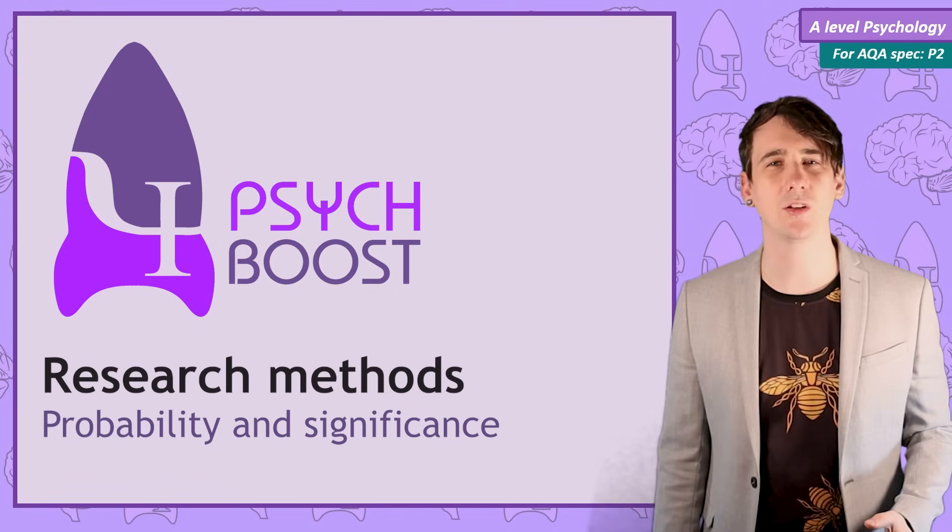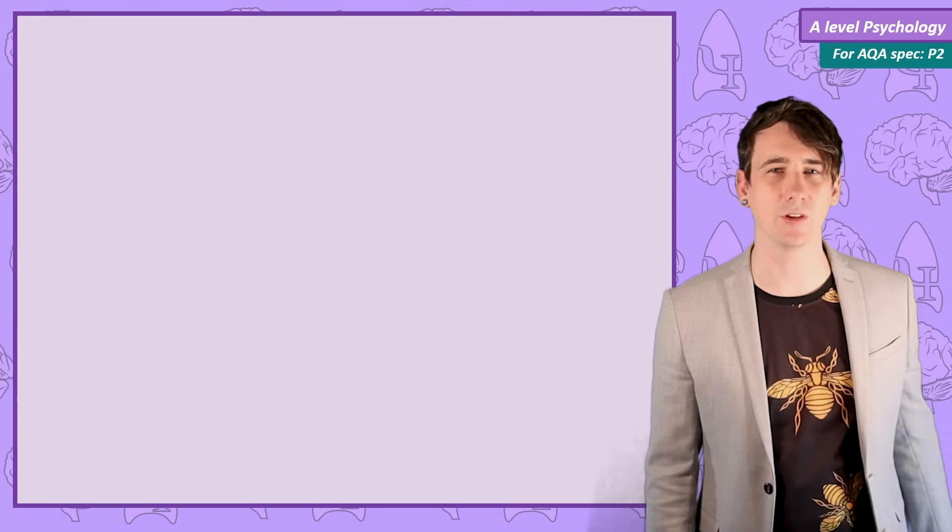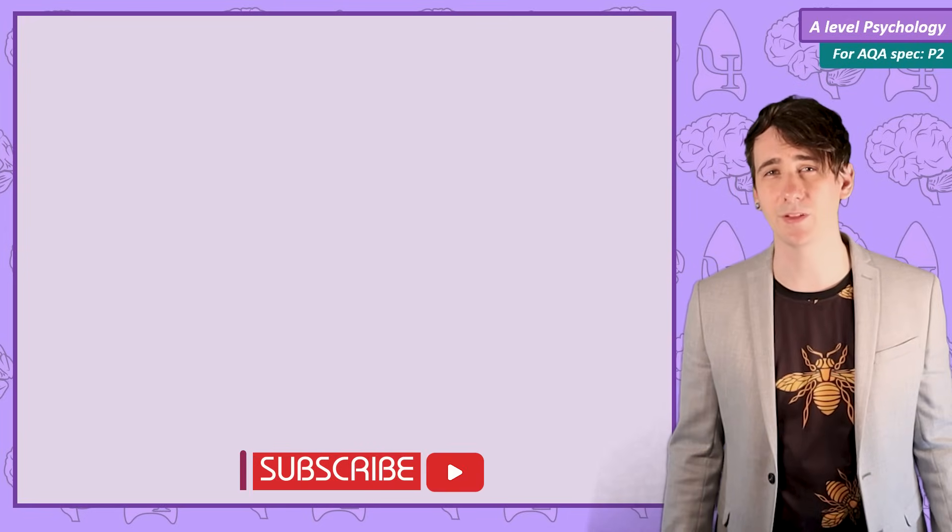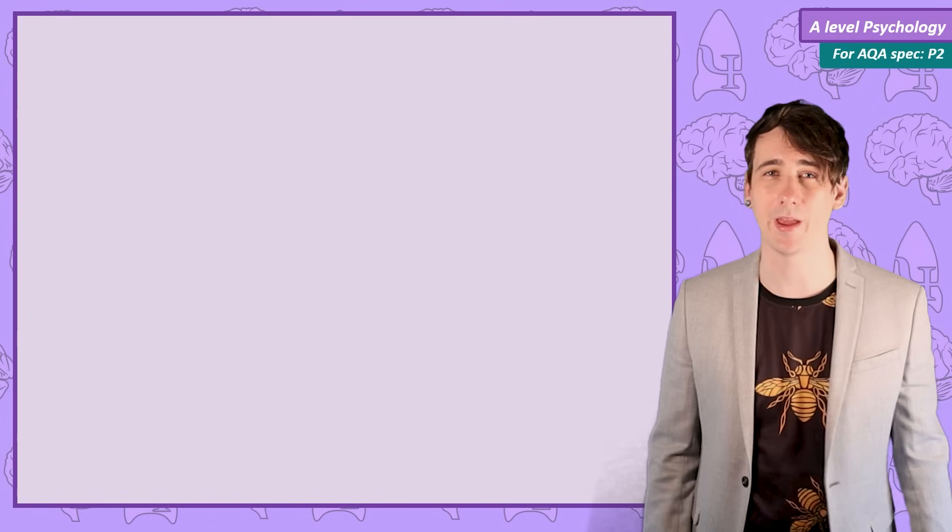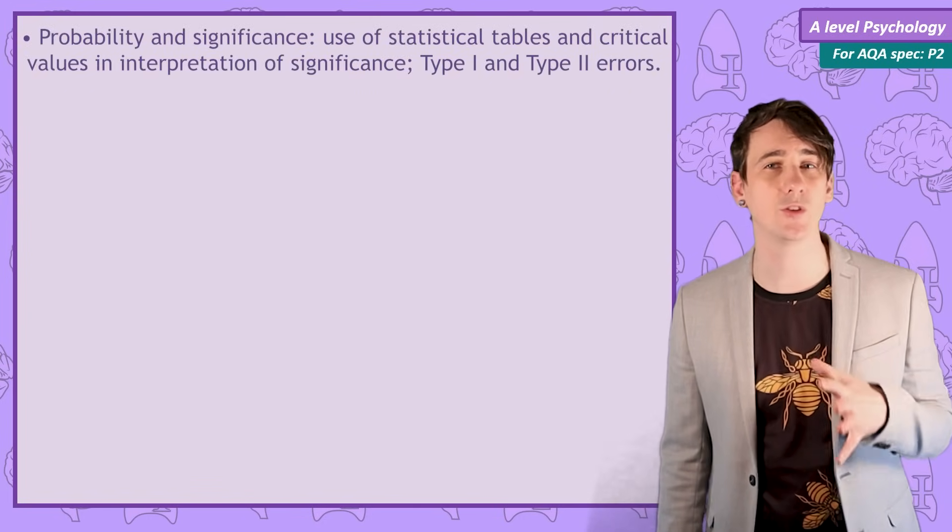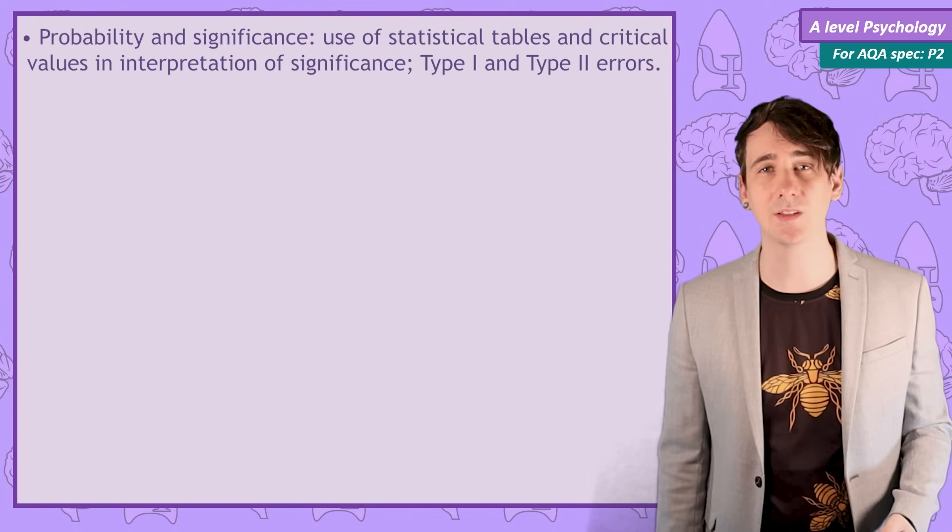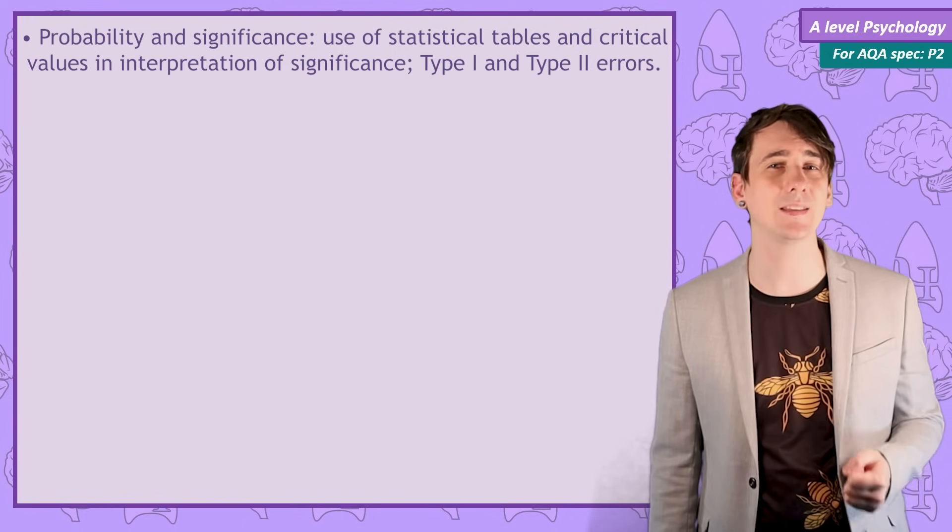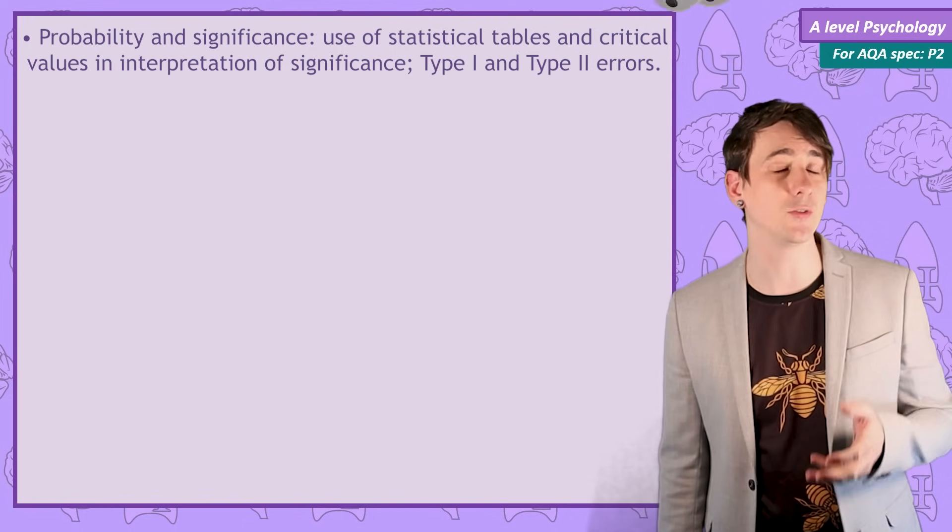In this research methods and psychology video it's probability and significance. This area of research methods is a little complex, but it is important to understand as the vast majority of research you study in psychology has been accepted due to a test of how likely the data that supports it came about due to chance.